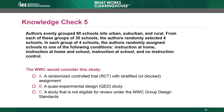Knowledge Check 5. Authors evenly grouped 90 schools into urban, suburban, and rural. From each of these groups of 30 schools, the authors randomly selected four schools. In each of the groups of four schools, the authors randomly assigned schools to one of the following conditions: instruction at home, instruction at home and school, instruction at school, and no instruction control. The WWC would consider this study A: a randomized controlled trial with stratified or blocked assignment, B: a quasi-experimental design study, or C: a study that is not eligible for review under the WWC group design standards.